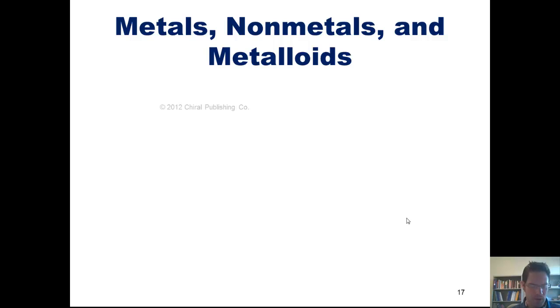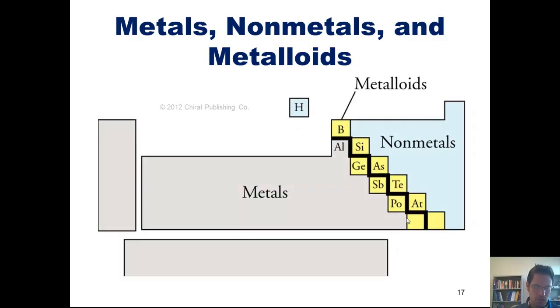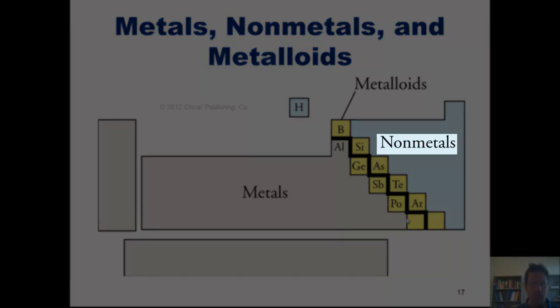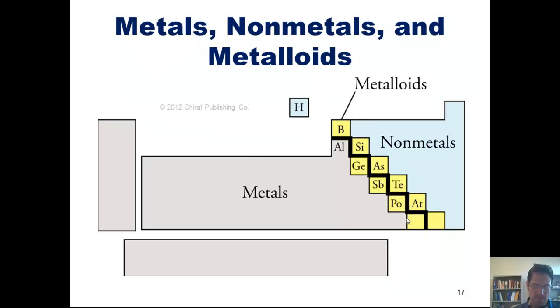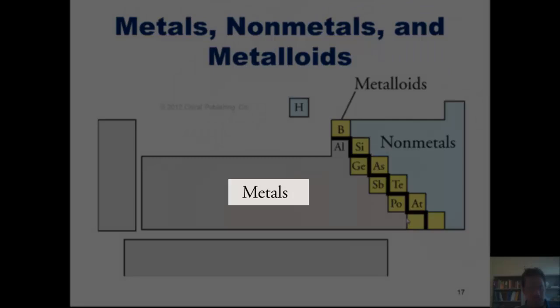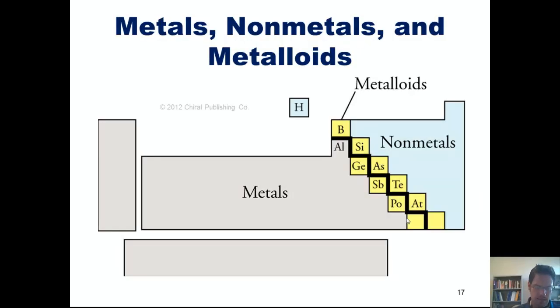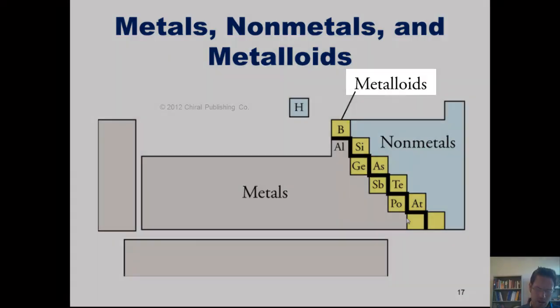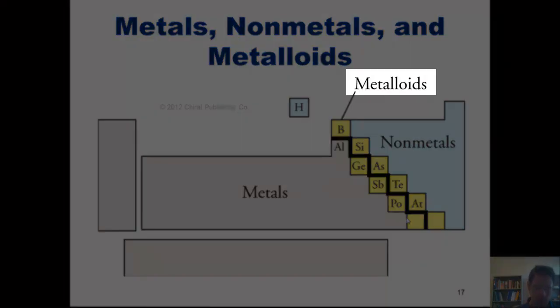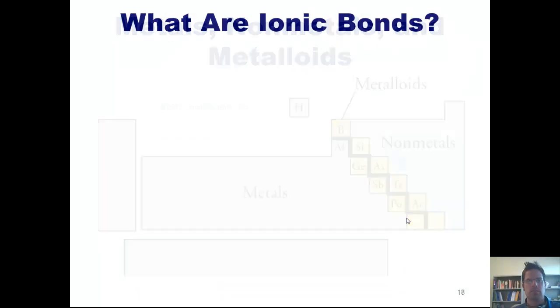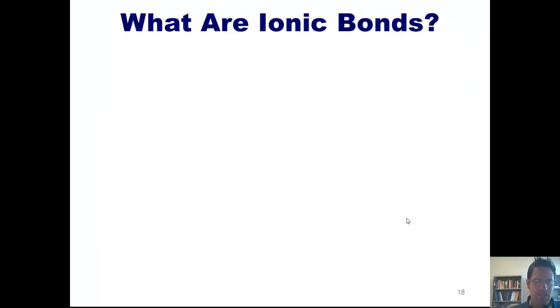Now, by way of reminder from our last presentation, elements found on the right side of the periodic table are called nonmetals, which are shown in the blue section here. And they have very specific and similar properties to each other. Most elements found in this gray section over here are called metals and also have similar properties. And the elements who straddle the line between nonmetals and metals are called metalloids, which are highlighted in yellow here. Keeping this in mind helps us to answer the question, what are ionic bonds?